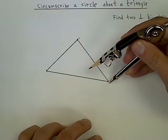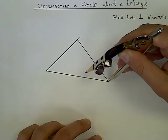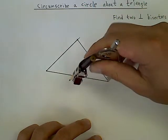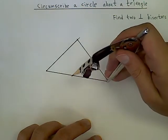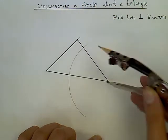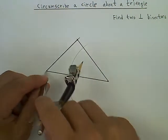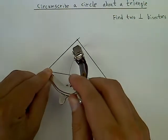So first we place the point of the compass on one endpoint of the side, and then draw an arc. Now place the point on the other endpoint and draw another arc.